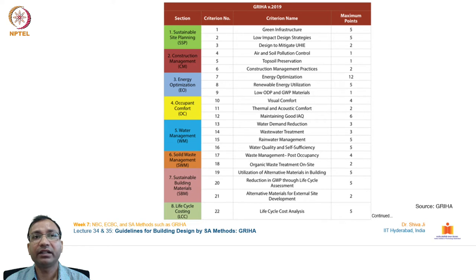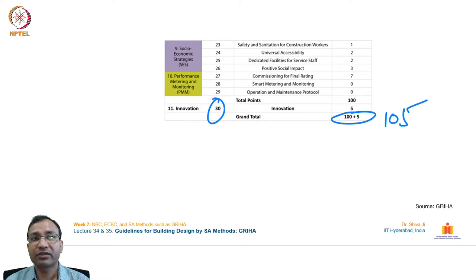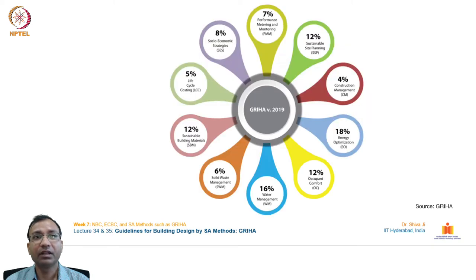The sections continue with water management, solid waste management, sustainable building materials, life cycle costing, socio-economic strategies, performance metering and monitoring, and an innovation category. In total, GRIHA version 2019 has 105 points, including five dedicated only for innovations.